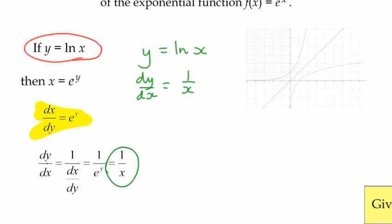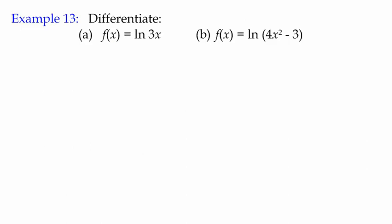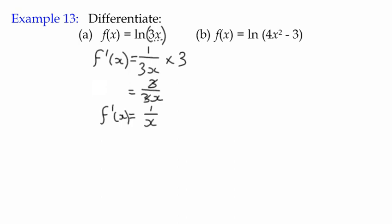That's an important derivative for us to use. I've got a couple of examples—this is Example 13. The first one: our function is the natural log of 3x. In most of these cases we're dealing with the chain rule. The derivative of natural log of 3x would be one over 3x, multiplied by the derivative of the term inside the bracket, which is three. That becomes three over 3x, and they cancel out, giving us one over x.